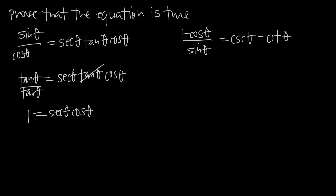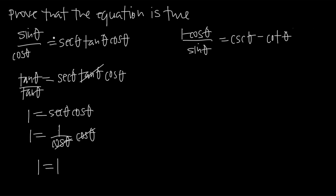We know that secant and cosine are reciprocals of one another — secant of theta is exactly 1 divided by cosine of theta, and cosine of theta is 1 divided by secant of theta. So if we replace secant of theta with 1 over cosine of theta, we can see that cosine of theta cancels from the numerator and denominator. What we get down to is 1 equals 1, which we know is always true. So we've proven that the original equation is true.